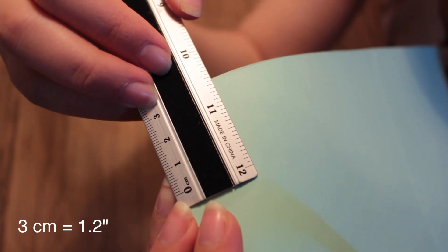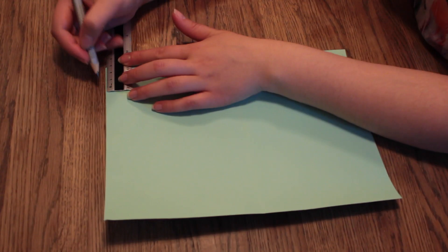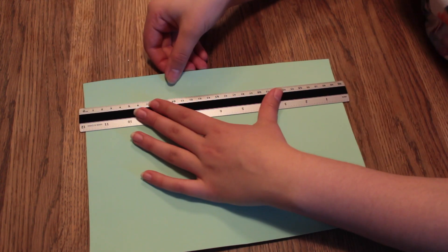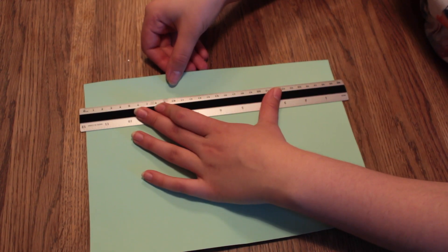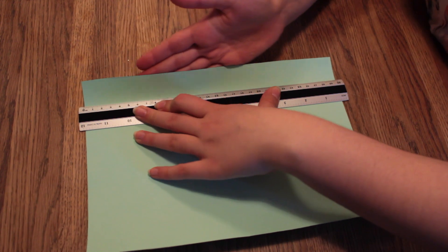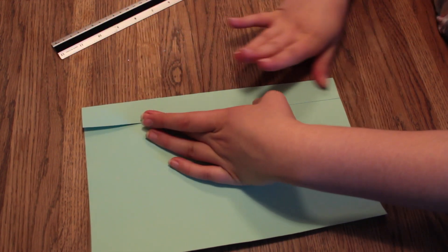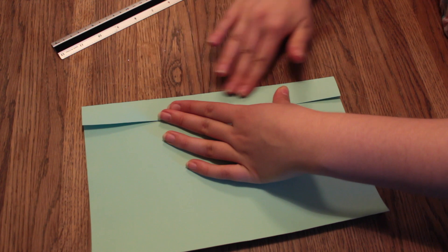Now measure 3 cm down from the top and then make a mark. Now place your ruler on the mark you just made and then fold the top part of the paper over it. And then again press down firmly to make the scores very obvious.